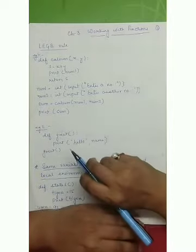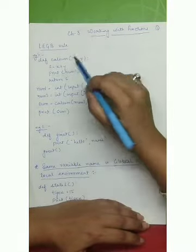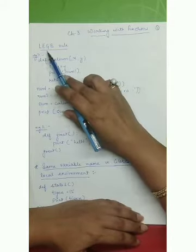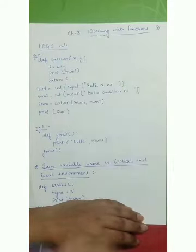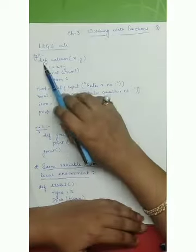Dear students, welcome to session 5 of chapter number 3, working with functions. In the last session we studied about the LEGB rule — that is local, enclosing, global, and built-in environments. So now we will be looking at one example here.